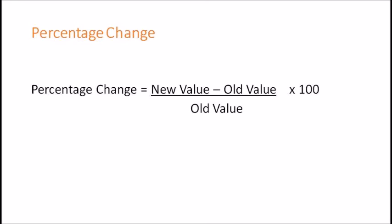So the percentage change formula is: new value minus old value, divided by the old value, multiplied by 100. Now when I say old value, I mean the original value. And the new value is simply the new data that you have.